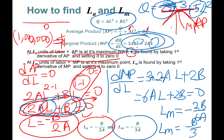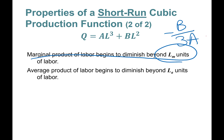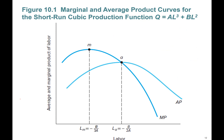Leaving L by itself: negative 2b divided by 6a, which simplifies to LM = -b / 3a. Again, you need a to be negative for the second derivative to be negative as well. So we've derived both points. Marginal product of labor begins to diminish beyond LM = -b / 3a units of labor.